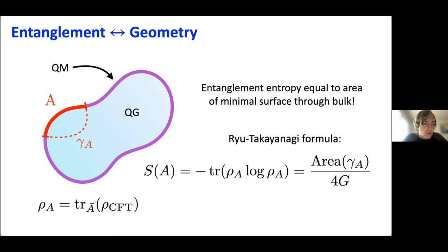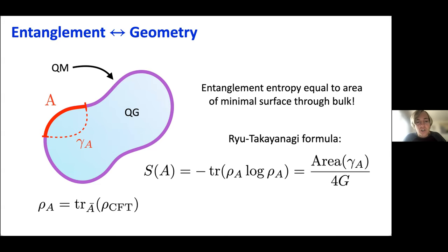It turns out that the entanglement entropy is equal to the area of a minimal surface through the bulk of my gravity theory. Specifically, I take a line segment with endpoints at the endpoints of A, allow this line to go into the bulk of my gravity theory, define the area as the length of the line, minimize this curve over all possible paths — and the entropy of A is given precisely by the length or area of this curve extending through the gravitational bulk. This highlights a really surprising connection between entanglement in the quantum theory and the geometry of the gravity theory.